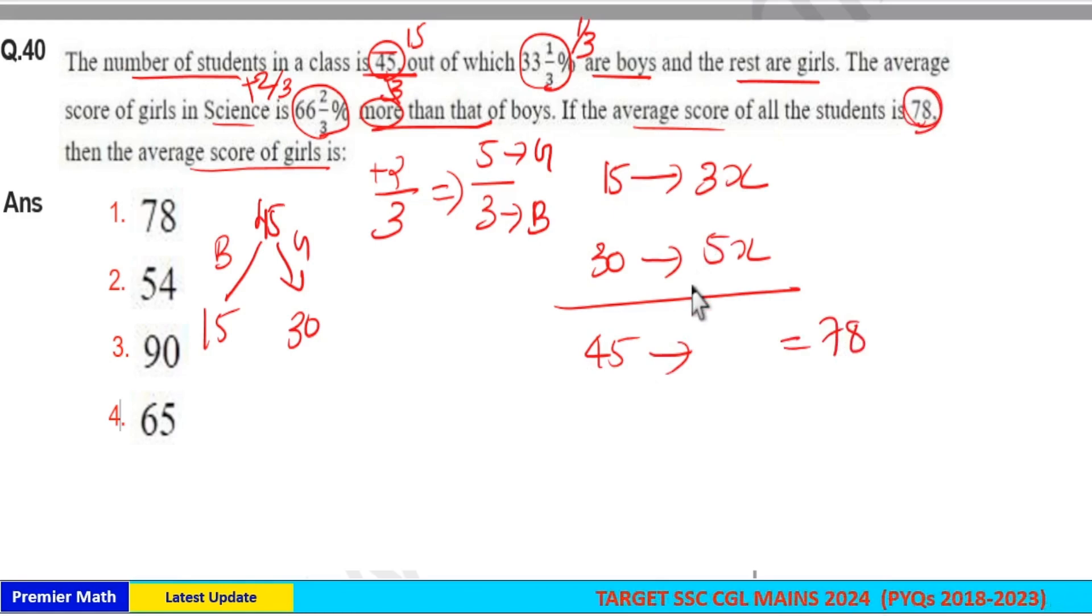Now from this data I'll get a value, and if you equate that value to 78, you'll get the answer. Here for simple calculation, take the ratio of the number of students: 15 goes 1 time in 15, 2 times in 30, and 3 times in 45.